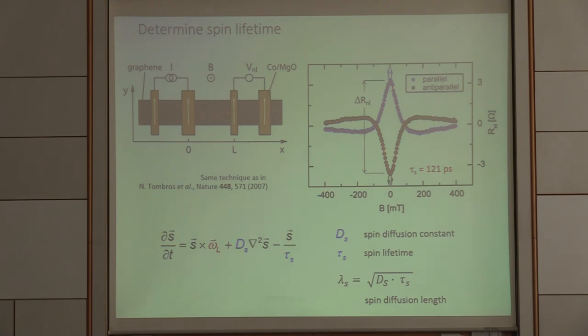There are two important parameters which we can fit now. This quantity here, S, is directly proportional to the delta R. And so with this expression, we can fit this curve. And we get the spin diffusion constant out. We get the spin lifetime out. Having these two quantities, we can also calculate the spin diffusion lengths. And I will mainly show now spin lifetime and spin diffusion lengths when we characterize.